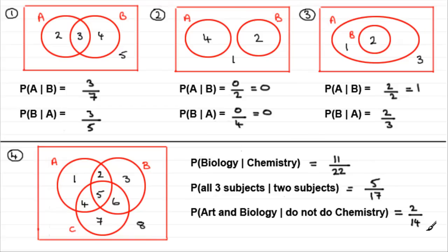I hope that's given you some idea of how you can handle conditional probability from Venn diagrams. That brings us to the end of this tutorial.